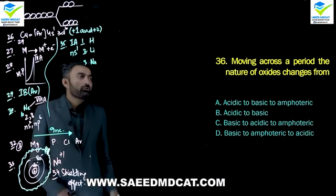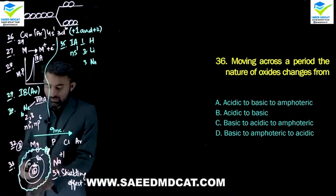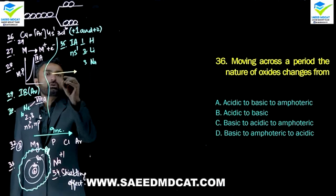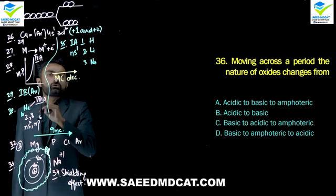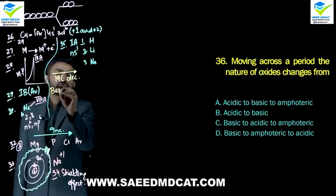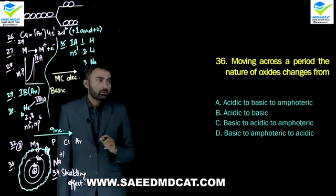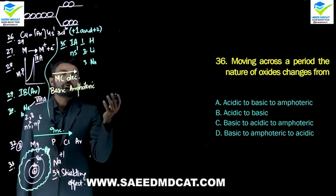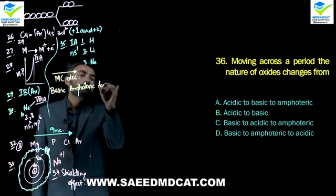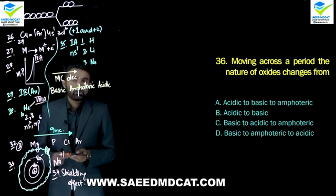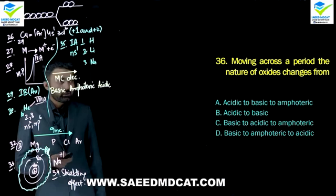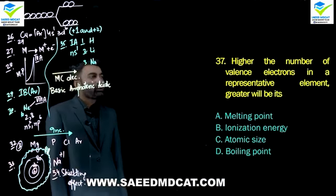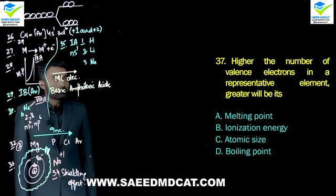Question 36: Moving across a period, the nature of oxide changes from what to what? The origin of this question is metallic character. Left to right, metallic character decreases. Metals form basic oxides, so as metallic character decreases left to right, basic character decreases. Then amphoteric oxides form, and when metallic character is completely gone and non-metallic character dominates, oxides become acidic. So the trend is: basic → amphoteric → acidic.